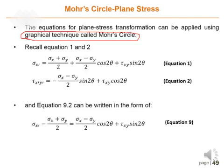Let's record equation 1 and equation 2. We have sigma x-prime, which is the new normal stress acting on the x-prime axis, and tau x-prime y-prime, which is the shear stress acting in the x-prime y-prime plane.